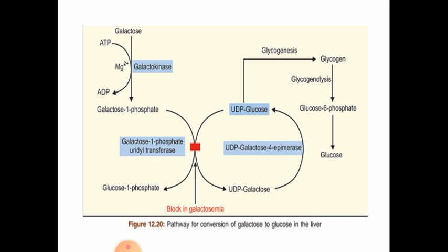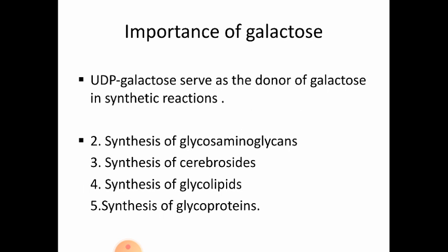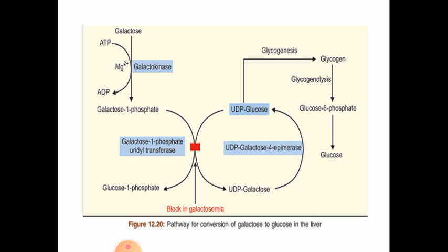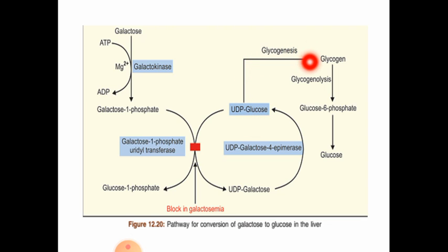This UDP galactose can again be converted back to UDP glucose by UDP galactose-4-epimerase enzyme. This UDP glucose can then enter into glycogenesis, which is the synthesis of glycogen.